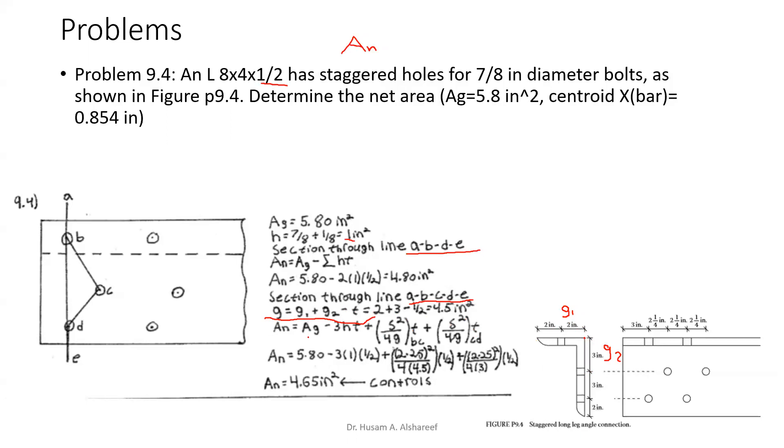Then when we plug it into the equation: A_g minus 3h times t - and it's 3 because we have 3 bolts - plus s²/(4gt) plus s²/(4gt), because we have two distances.